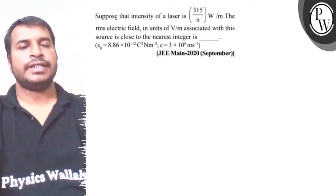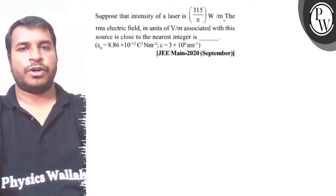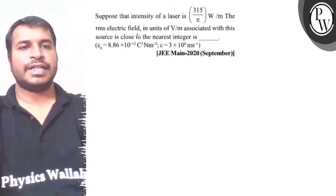Hello, let's understand the question first. The question says, suppose that intensity of a laser is 315 upon pi watt per meter square, the RMS electric field in unit volt per meter associated with this source is close to the nearest integer.